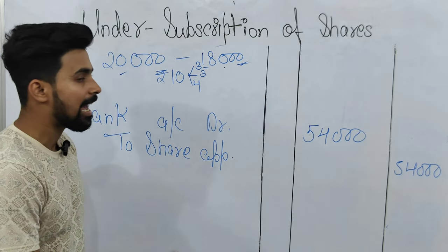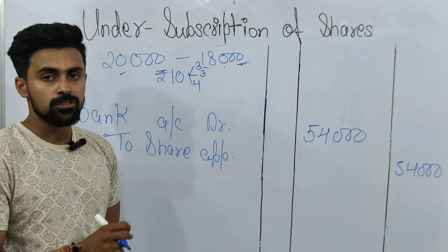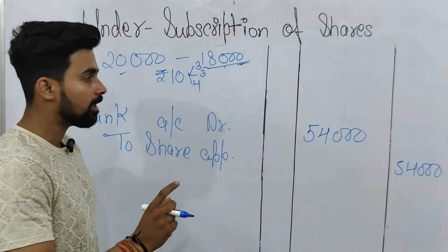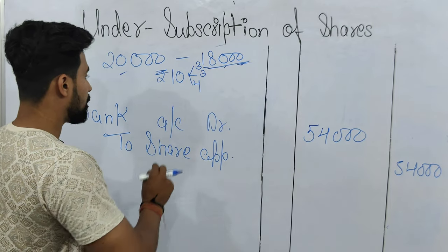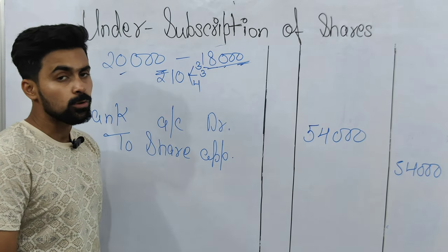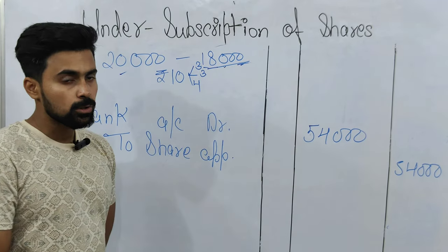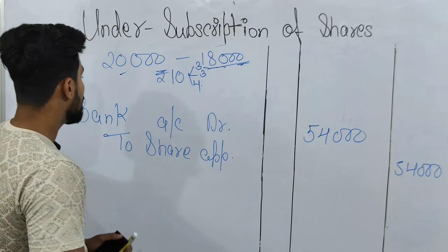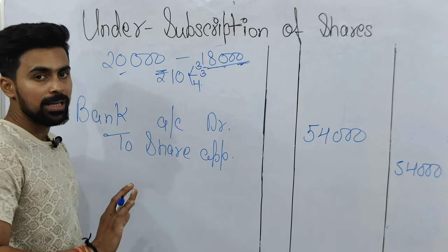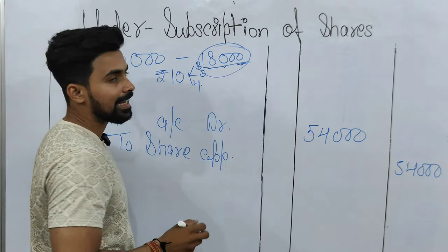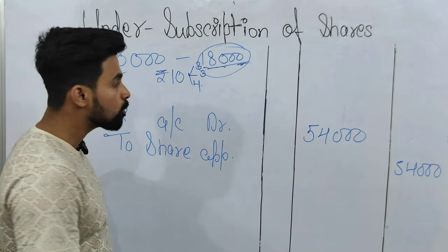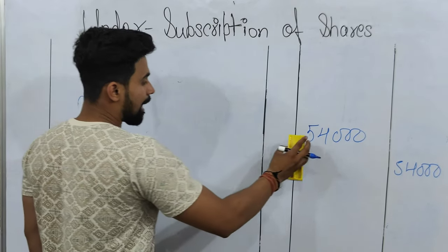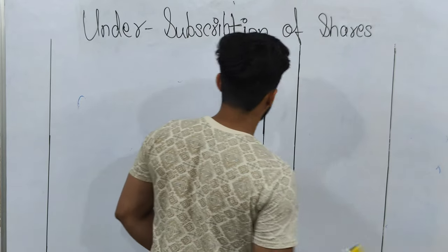All entries — application, allotment, and first call — will be made based on 18,000 shares. At application: 18,000 into 3; at allotment: 18,000 into 3; at first call: 18,000 into 4. The rest of the entries remain the same as in a normal question. In under subscription, nothing extra needs to be done — simply remember that all entries are based on the amount for which the public actually applied.